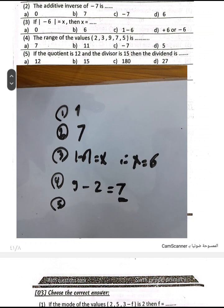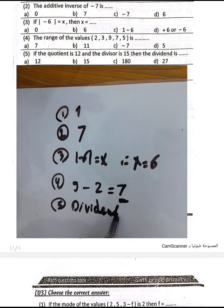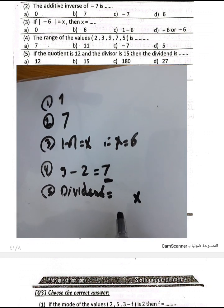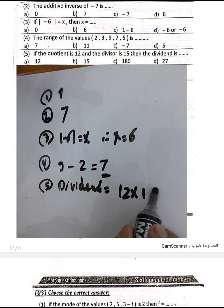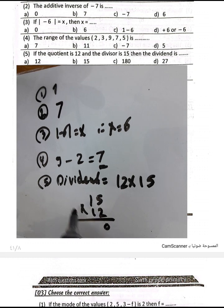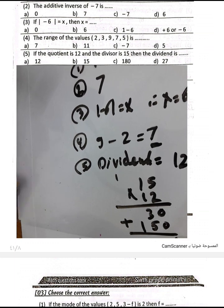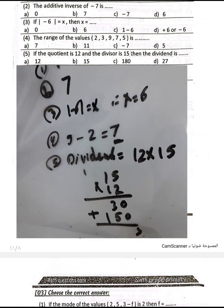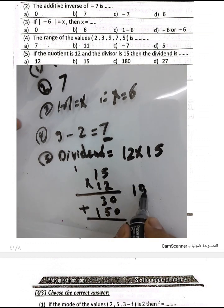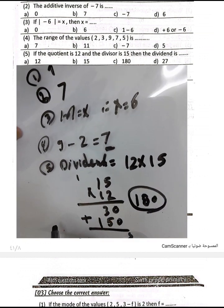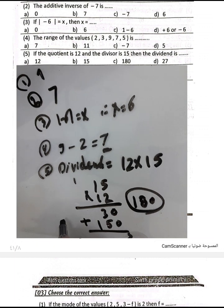Question number 5: the quotient is 12 and the divisor is 15. We find the dividend by multiplying the quotient by the divisor: 15 times 12. Computing: 2 times 5 equals 10, carry 1; 1 times 2 plus 1 equals 3; 1 times 5 equals 5; 1 times 1 equals 1. Adding 30 plus 150 gives 180. The dividend is 180.